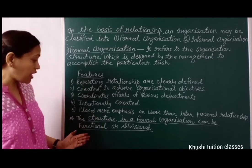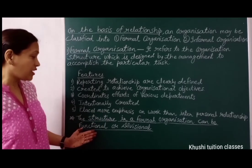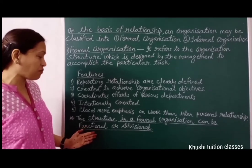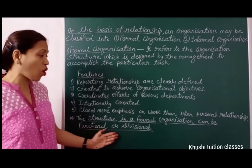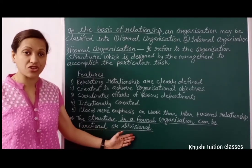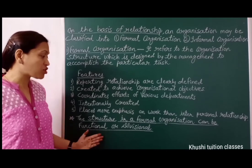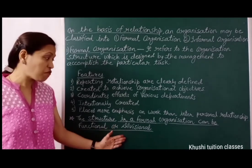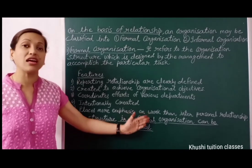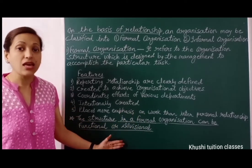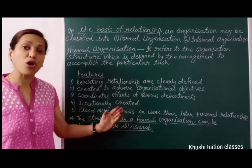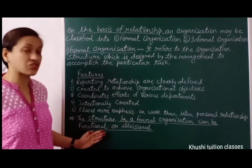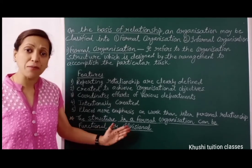An important point here is that the structure in a formal organization can be functional or divisional. This means that functional and divisional structure are the two parts of formal organization — any formal organization can be functional or divisional in structure.